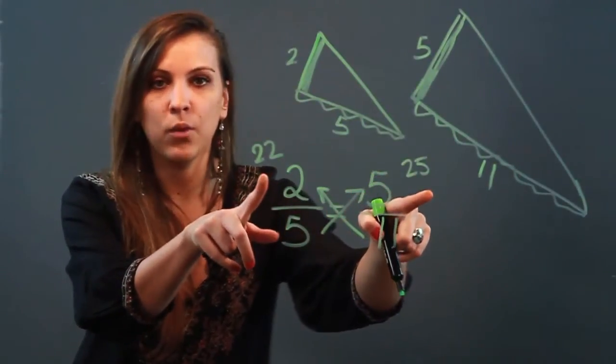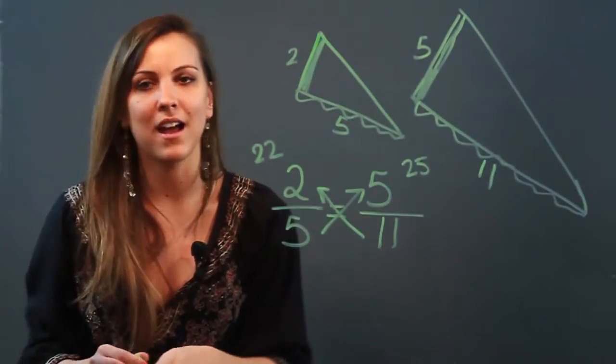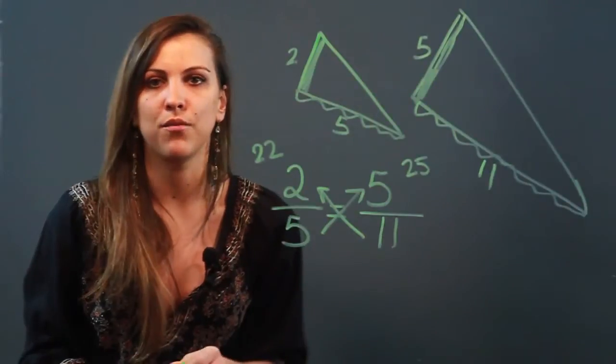Because these products are not equal, that tells me that these two triangles, even though they might look it, are not similar triangles. So that's how you use proportions in order to determine the similarity of two figures.